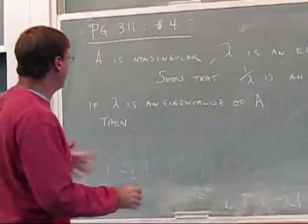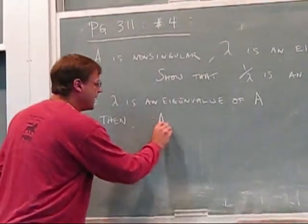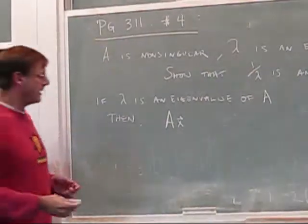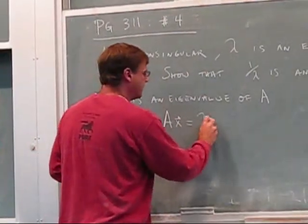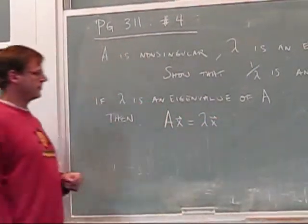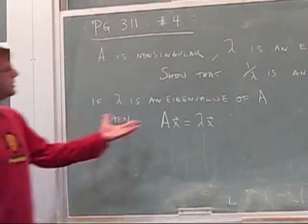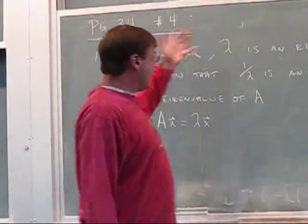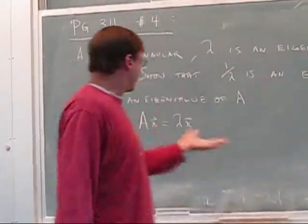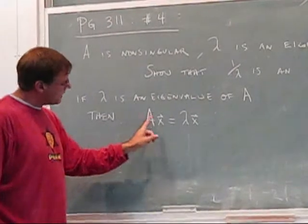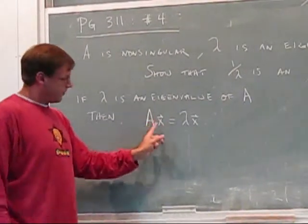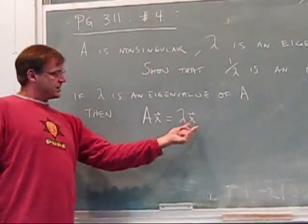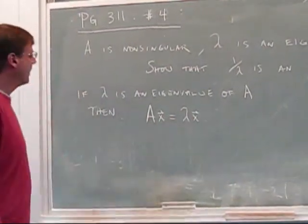The definition of an eigenvalue is that if you take A and you multiply it by a vector x, the eigenvector, you get lambda x. OK, so this is what we start with. We have an eigenvalue of A. So that means if you take A and you multiply it by an eigenvector, you get the product lambda times x.